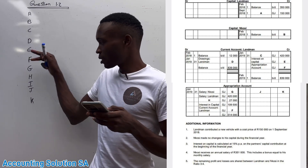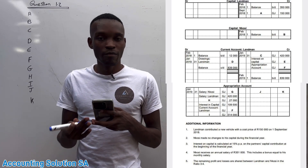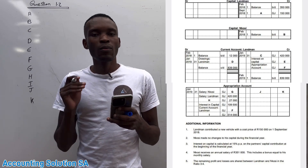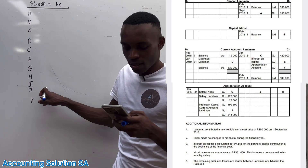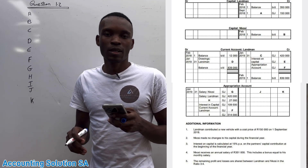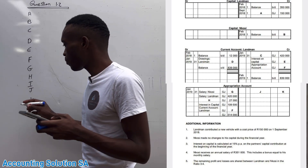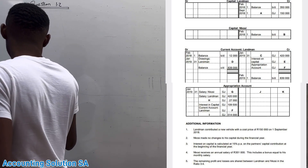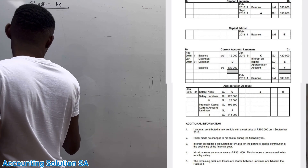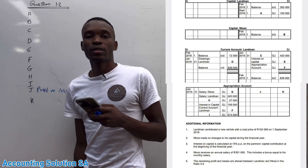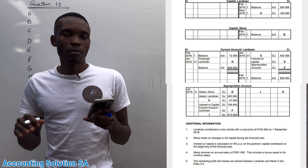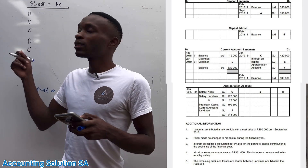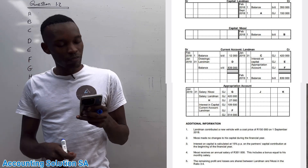If you are given letters like this and you have a format, start with the one that you feel you know best. For example, we have Number J. Under the appropriation account, if you know the format, you know that on the credit side you only have profit or loss. Don't just go through Number A, B, C in order, because you will find that some figures require you to calculate another one first.